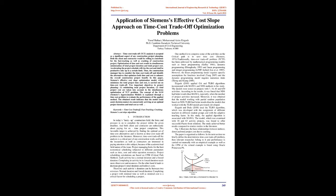Keywords: time-cost trade-off, fast-tracking, crashing, Siemens' cost-slope algorithm. Introduction: In today's hurry-up construction field, the force and pressure is on to complete the project within a given deadline. Both client and contractor are enthusiastic about paying for on-time project completion. This favorable target is achieved by finding the optimal set of time-cost alternatives and is known as time-cost trade-off problem in the literature. Time-cost trade-off analysis is a critical part of any construction works, and both researchers as well as contractors are interested in this subject because of its academic and real-field nature.